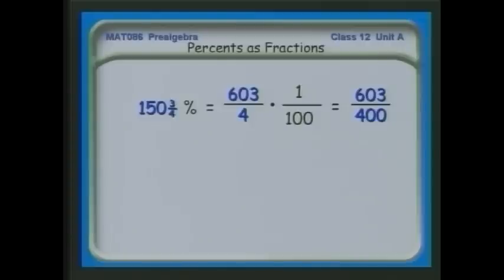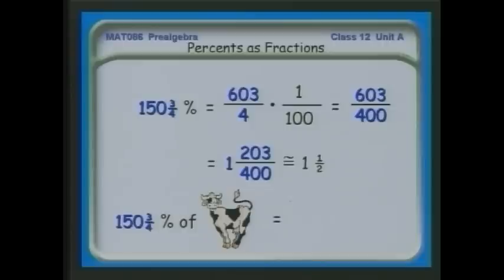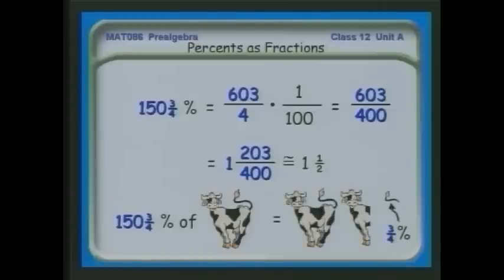Since 603 over 400 is an improper fraction, I change it to a mixed number by dividing 603 by 400, getting 1 and 203 four-hundredths. You might notice that 203 four-hundredths is awfully close to 200 four-hundredths, which is about a half. So 1 and 203 four-hundredths is awfully close to one and a half. If I have 150 and three-quarters percent of a cow, that would be a cow and a half — maybe that extra three-quarters percent is the tail of the cow.